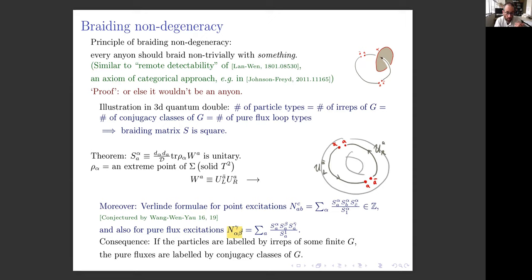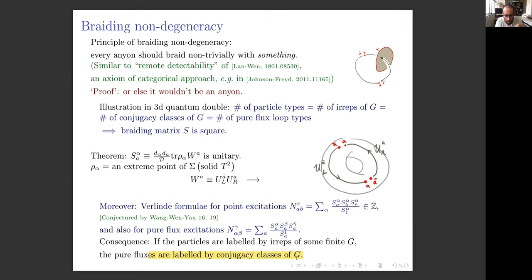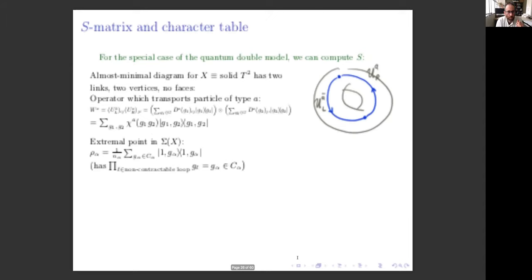In this case, we can prove this number is the fusion multiplicity of the ball minus two balls and is therefore an integer within the Entanglement Bootstrap. A more far-reaching consequence is that the S matrix determines the fusion multiplicities. If the particles are labeled by irreps of some finite group—as in the quantum double and various generalizations like the twisted quantum double, which some people have conjectured exhaust the possibilities of topological order in three dimensions—it means the pure fluxes are also labeled by conjugacy classes of the group, because there has to be this unitary pairing between the two.